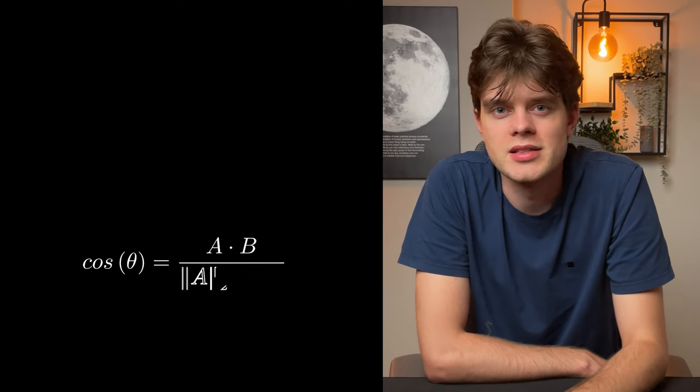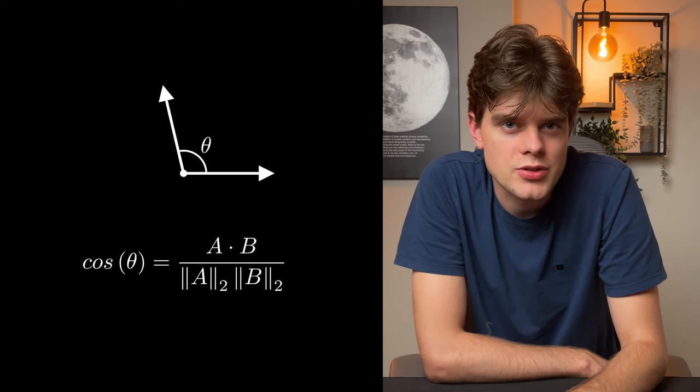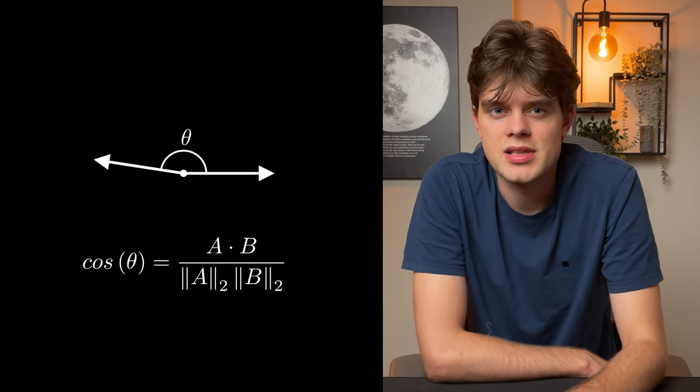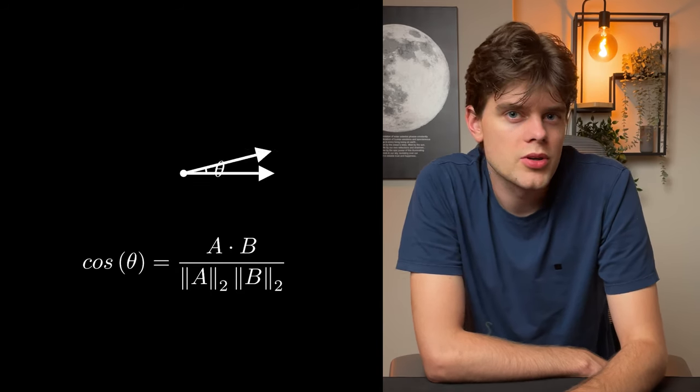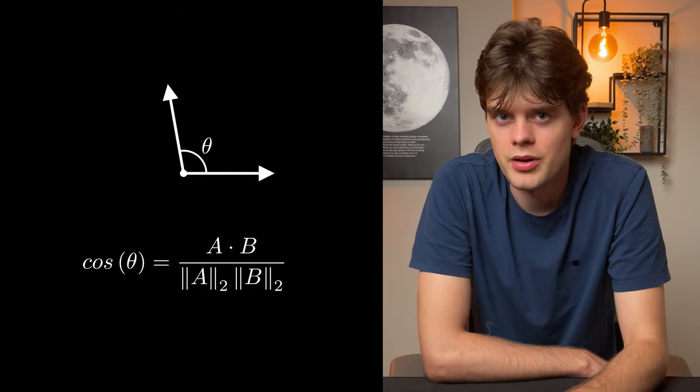Cosine similarity is a similarity measure that is widely used in the field of machine learning, from natural language processing where it is used to compare text, all the way to image processing when comparing images or human faces. Cosine similarity is defined as the cosine of the angle between the vectors, meaning this measure is scale-invariant, or in other words unaffected by the length of vectors being compared.